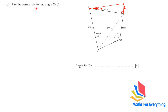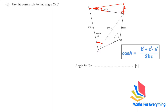Part B: use the cosine rule to find angle BAC. The cosine rule is: cos A = (b² + c² − a²) / (2bc). Remember, if you want to find angle A, the side opposite to it comes after the minus sign. B and C can be either of the other two sides. It's a straightforward 4-mark question.